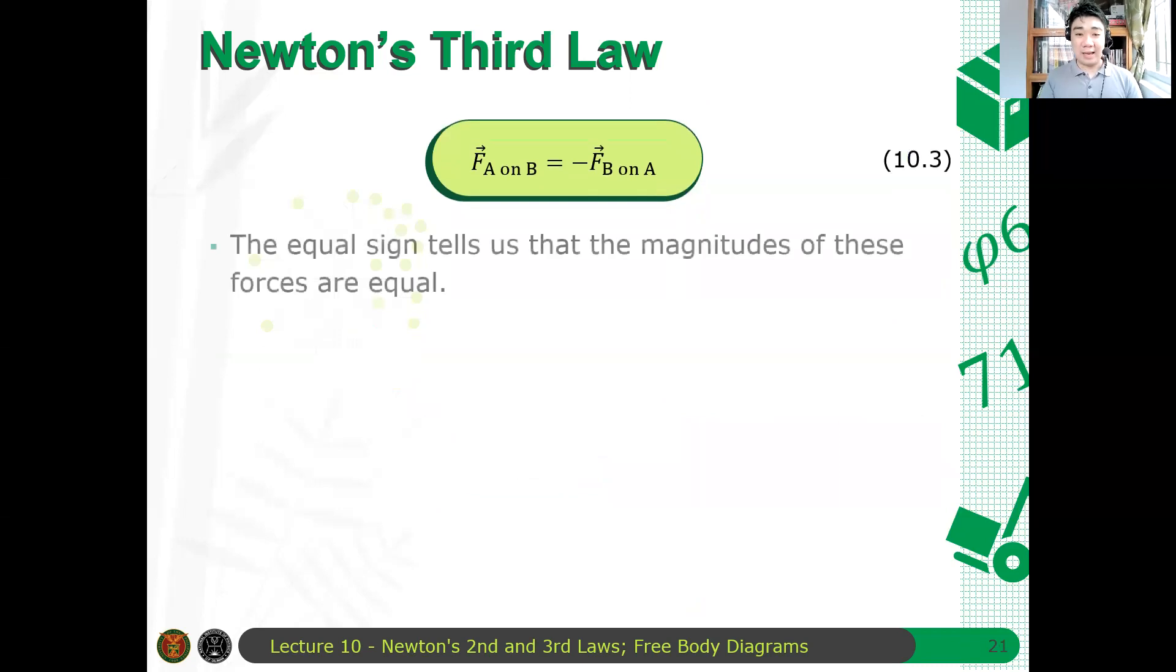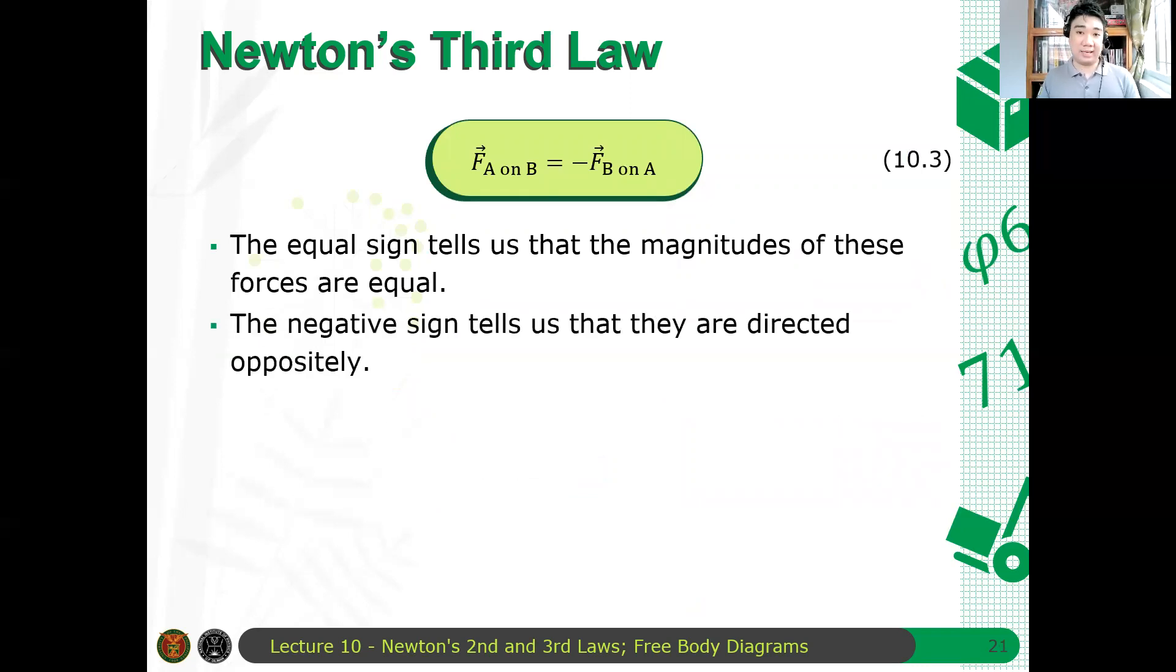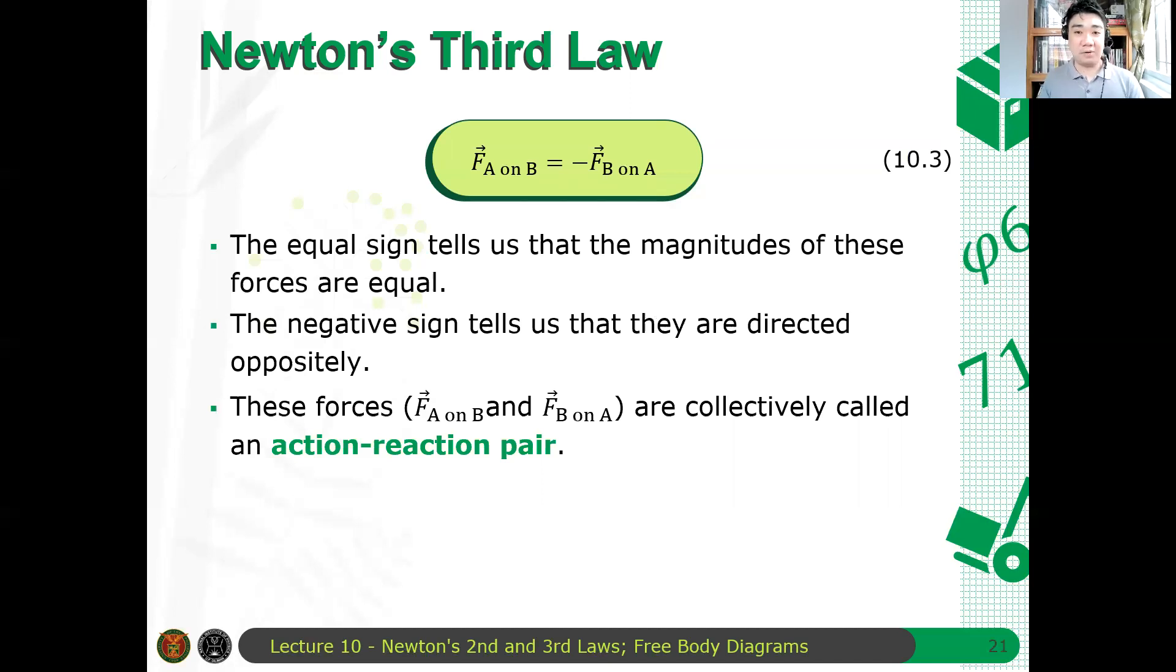Now, F_A on B is negative F_B on A. Again, the equal sign tells us that the magnitudes of these forces are equal. And the negative sign tells us that they are directed oppositely. They're on opposite sides or opposite directions. These forces are collectively known as an action-reaction pair.